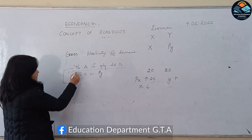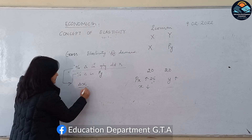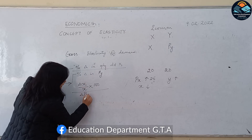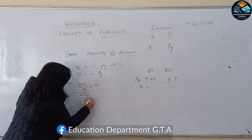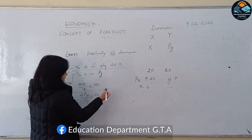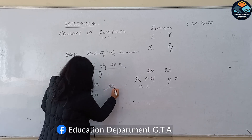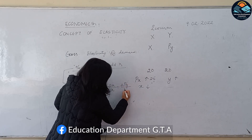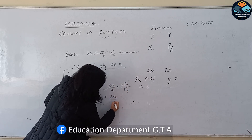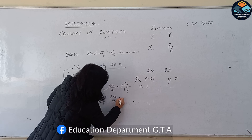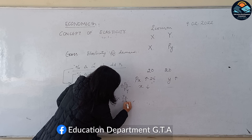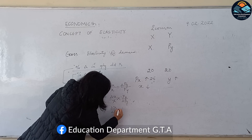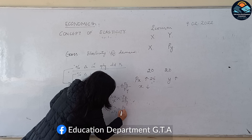The mathematical formula for cross elasticity: percentage change in quantity demanded of X = (ΔX / X) × 100, divided by percentage change in price of Y = (ΔPY / PY) × 100. Simplifying further gives: (ΔX / X) × (PY / ΔPY), which simplifies to: ΔX / ΔPY × PY / X.